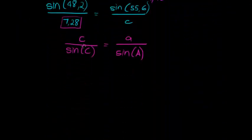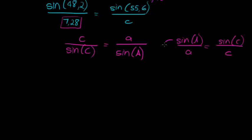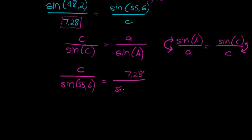So, I can rather have said that C over sine C is equal to A over sine A. This would have been much easier to use this formula. Saying sine A over A is equal to sine C over C, obviously, if I just take the reciprocal on this side, I do the same on the other side. This would have been easier, let me show you why, because now we have C over sine of 55.6 is equal to 7.28 over sine of 48.2.